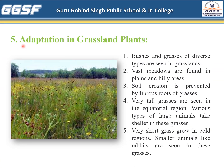The fifth adaptation is adaptation in grassland plants. Bushes and grasses of diverse types are seen in grasslands. Grasses are found in plains and hilly areas. Soil erosion is prevented by the fibrous roots of grasses. Very tall grasses are seen in the equatorial region, and various types of large animals take shelter in these grasses — large animals like tigers, elephants, and deer remain hidden in these grasses. Very short grass grows in cold regions, and smaller animals like rabbits are seen in these grasses.